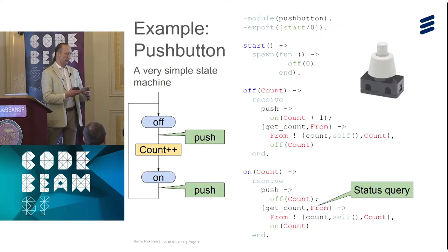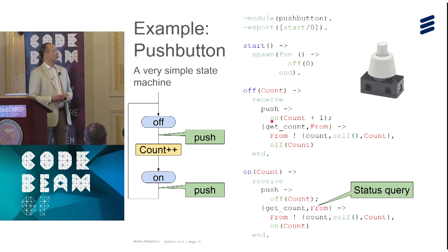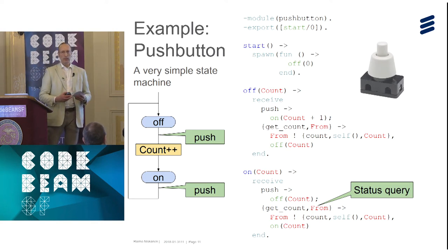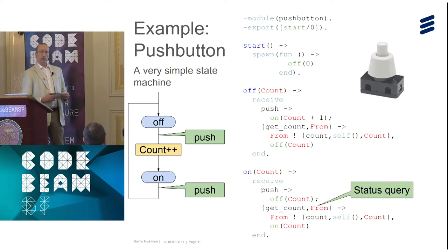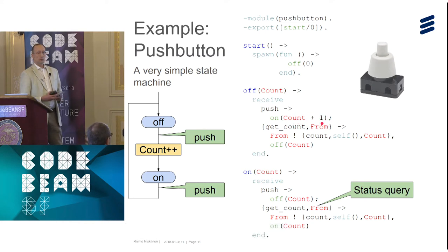Here is a very simple state machine written in plain Erlang, not using any behavior API. Simply, when it receives a 'push' event, it does the action 'count + 1' and goes to the next state. There's also a status query — 'get_count' asks the count and goes to the same state. The state here is actually the receive statement — the code pointer of the receive statement is the actual state. The function is there just to give it a name.